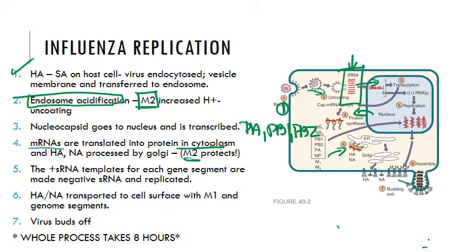M2 has inserted itself into the membranes of both the ER and the Golgi. This is important because it protects the HA and NA as they are created — you don't want too much acidification to dysregulate or change their function. M2 acts as a kind of reverse acid pump there, preventing acidification that might damage these proteins. Once HA and NA are processed by the ER and Golgi, they are transported to the cell surface, where we want them on the virion surface eventually.